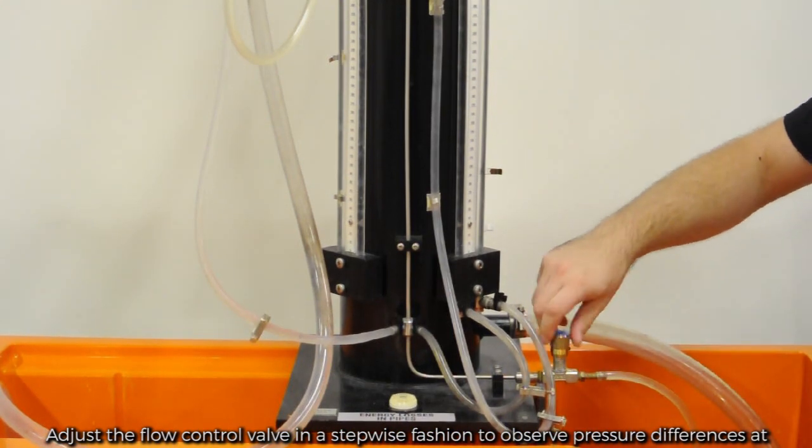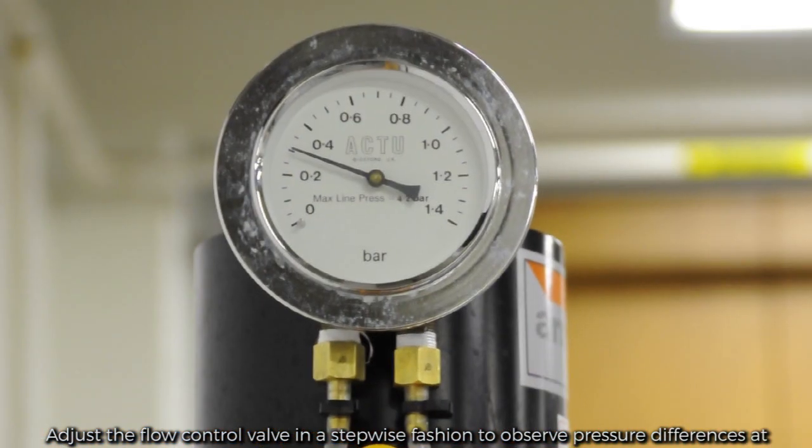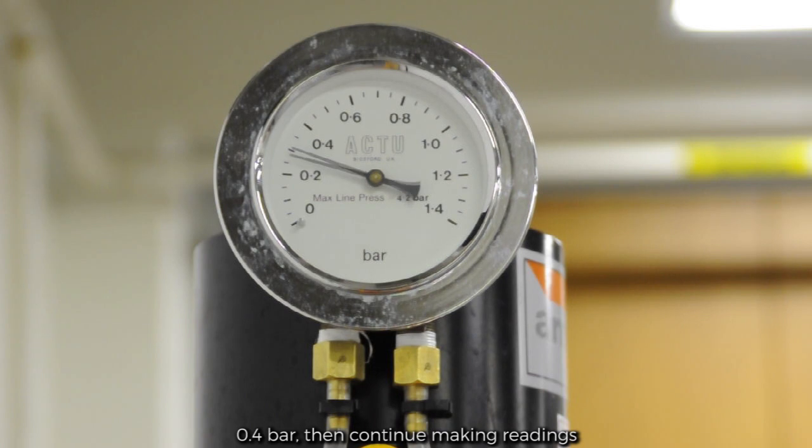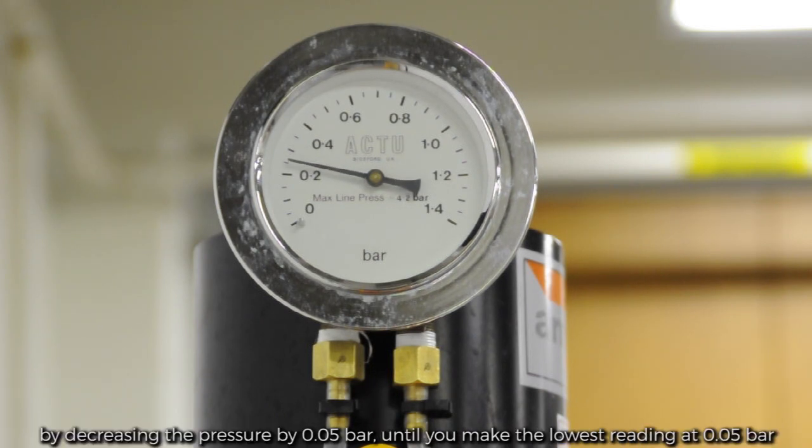Adjust the flow control valve in a stepwise fashion to observe the pressure differences at 0.4 bar. Then, continue making readings by decreasing the pressure by 0.05 bar until you make the lowest reading at 0.05 bar.